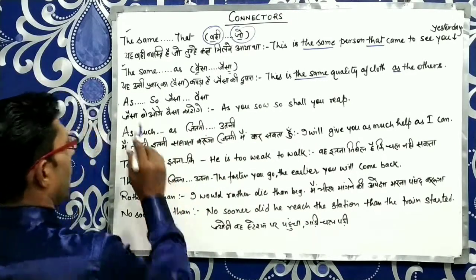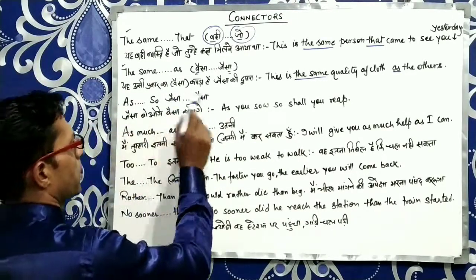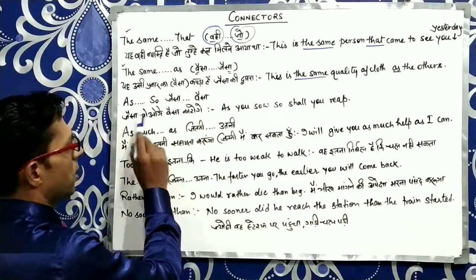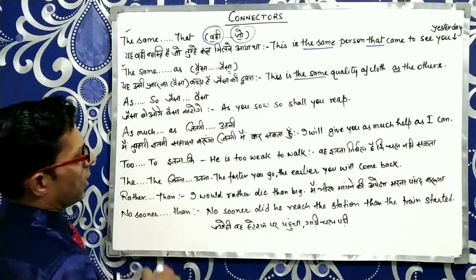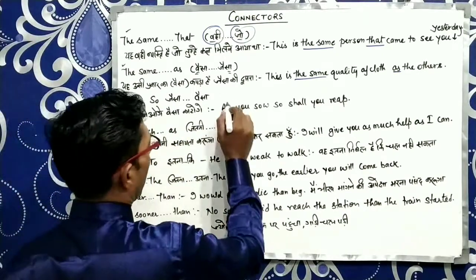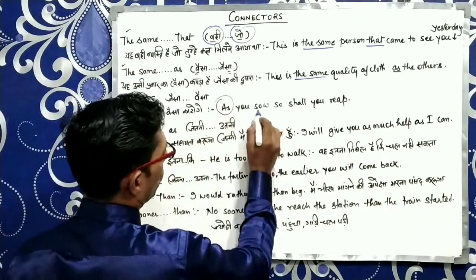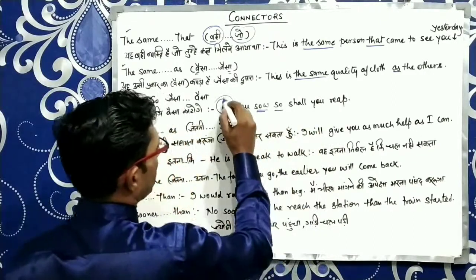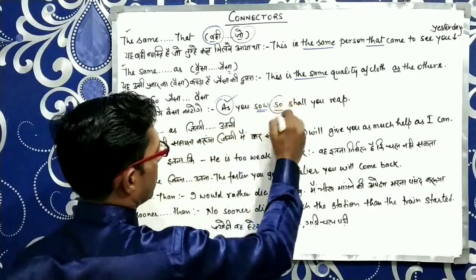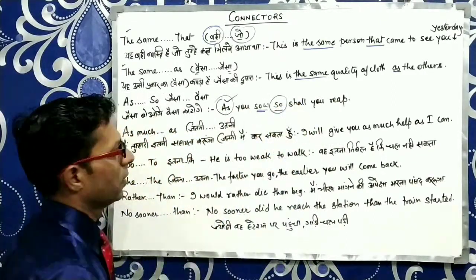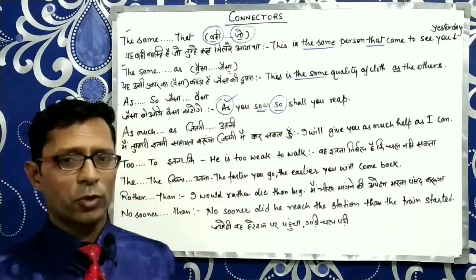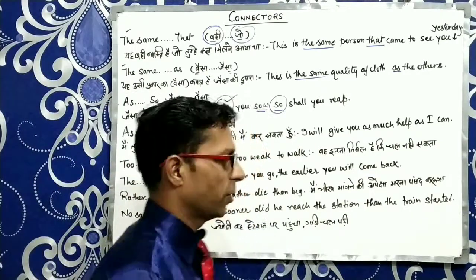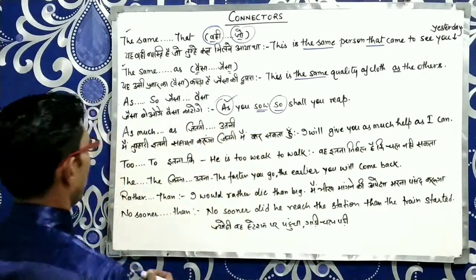اگلا connector ہے As اور So — یعنی کہ جیسا اور ویسا. As you sow, so shall you reap. جیسا بوگے ویسا کاٹو گے. یہ کہاوت بھی آپ نے سنی ہوگی.